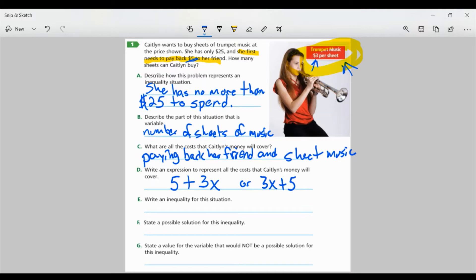Part E. Write an inequality for this situation. Well, I know I'm going to use my 3X plus 5, and again, you can use the 5 plus 3X. That's fine. And I know she has $25 to spend. But remember, like we said in Part A, she has no more than $25 to spend. So that means she has to either pay less than $25 or equal to. So that would be our inequality for this situation.